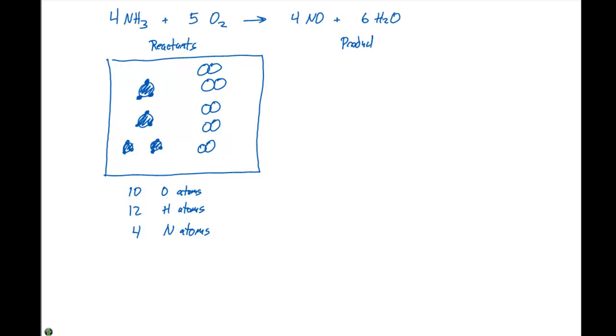Over here on the product side, we can also pictorially show what happens in going from reactants to products. In this case, we're gonna form four NO molecules. So an NO is gonna have a slightly shaded atom and an open circle. So we're gonna get four of those, and then we're gonna have six waters. The waters are the oxygen with two hydrogens on each side.